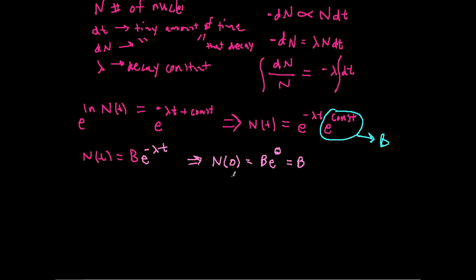In other words, n of zero equals b, so we can plug that in for b in this equation. So this b is just n of zero, and then to write the whole equation, n of t equals n of zero, e to the negative lambda t. And that's how you arrive at the equation for radioactive decay.